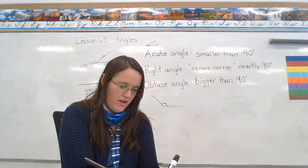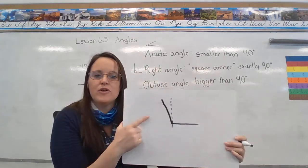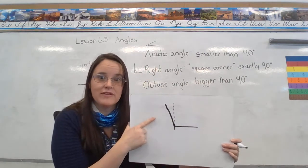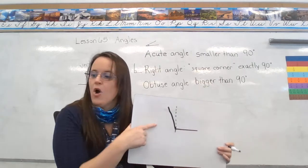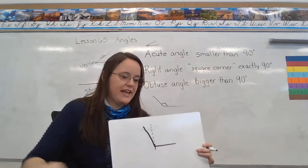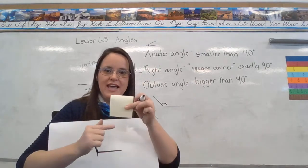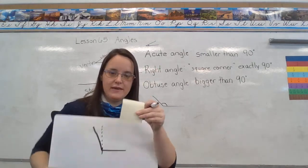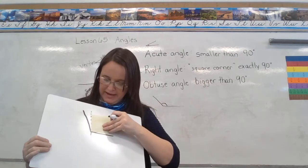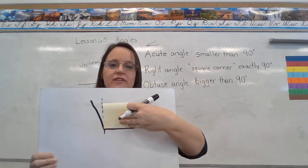We could draw a perpendicular line and say, oh no, this angle is bigger than the perpendicular line. Or if you have a piece of paper hanging around, like here I have a sticky note, our papers have right angles on them.